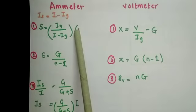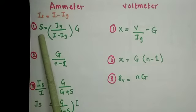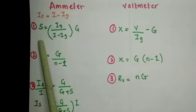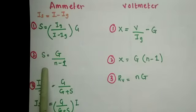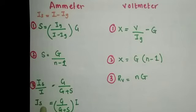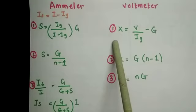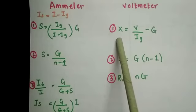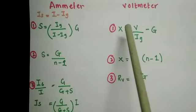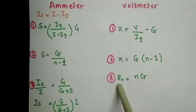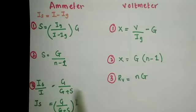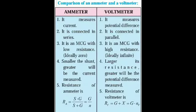To summarize the formulas: For converting a galvanometer into an ammeter, the shunt (low resistance connected in parallel) is given by S = ig·G/(i − ig) and also S = G/(n − 1). The current across the shunt is is = G·i/(S + G). For converting a galvanometer into a voltmeter, the high resistance in series is X = V/ig − G and also X = G·(n − 1). The resistance of the voltmeter is n·G. These formulas will be used in the numericals given in your textbook.